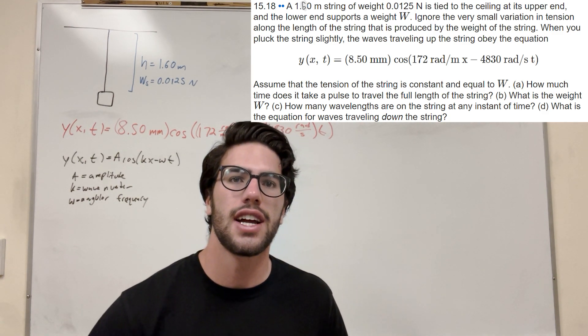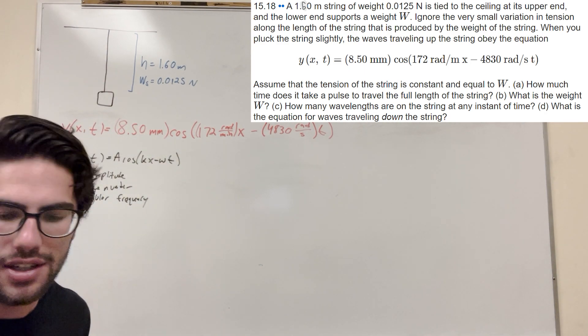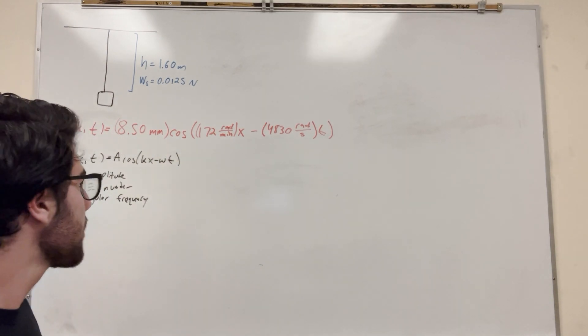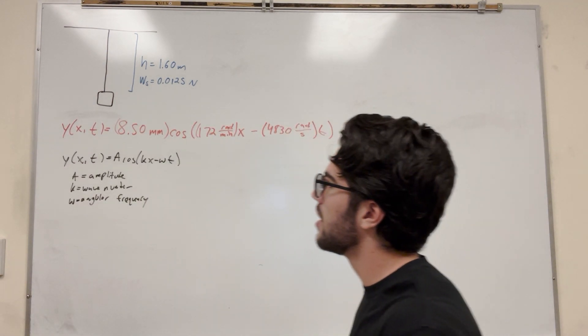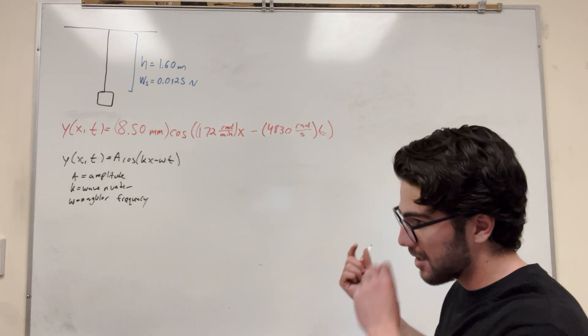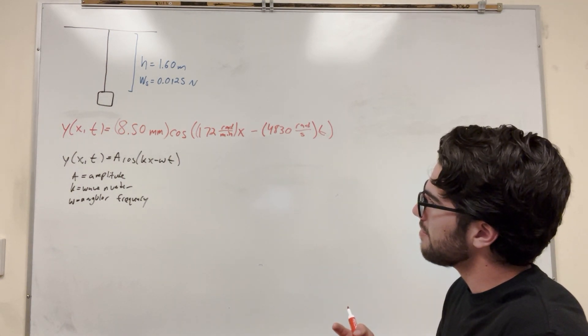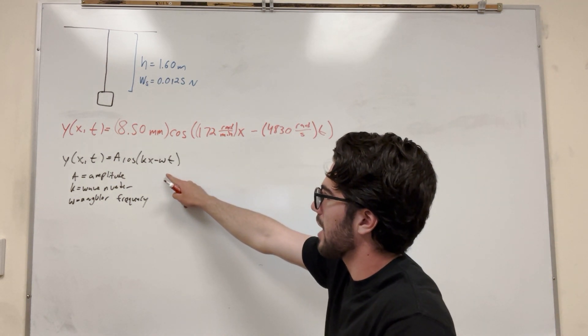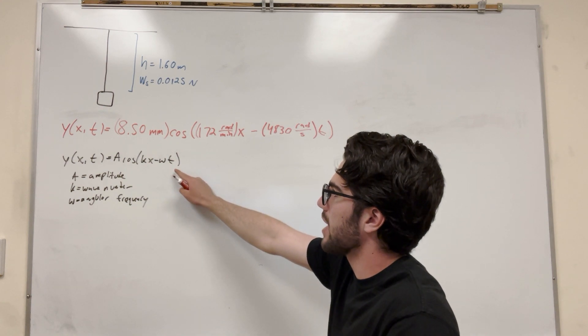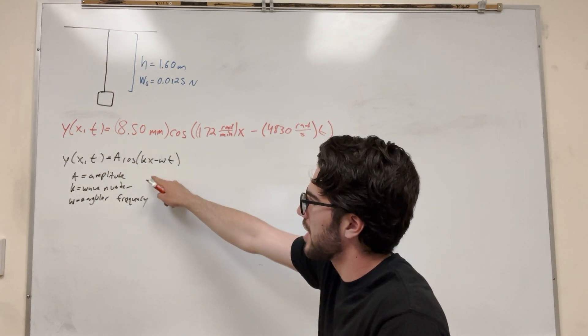So, the first one is how long does it take the pulse to travel through the whole string, right? Let's look at what we got and see how we can solve this. We're given this equation in terms of x and t, so that's its y position in terms of its x along the string and its time since the string started. And it matches the form y(x,t) equals a cosine(kx - ωt), where ω is angular frequency, k is the wave number, and a is amplitude.